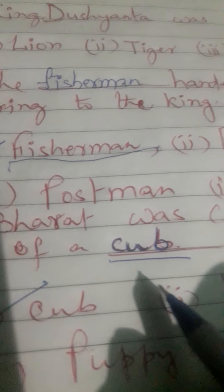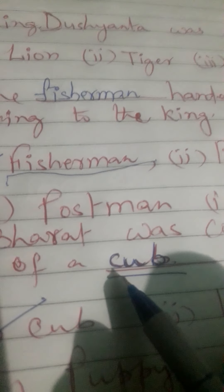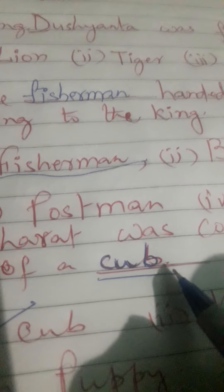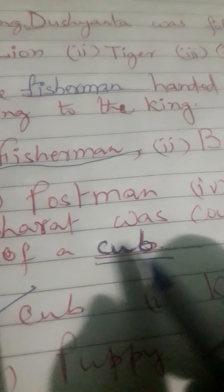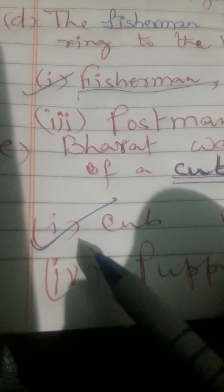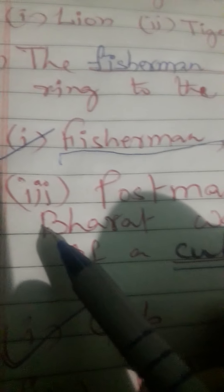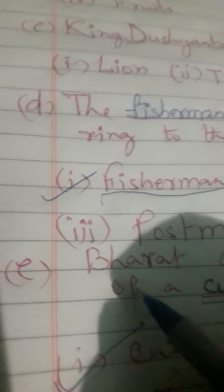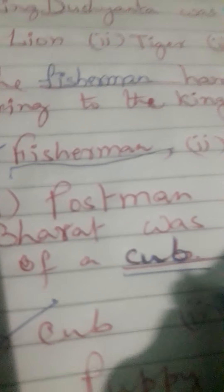(e) Bharat was counting the teeth of a ___. You have four options: first, cub; second, kid; third, calf; and fourth, puppy. Your correct answer is cub. So you have to fill up cub. Consequently, it will become: Bharat was counting the teeth of a cub.